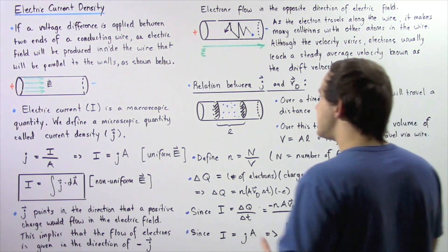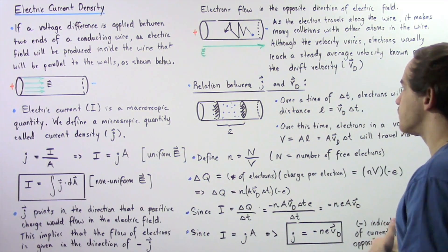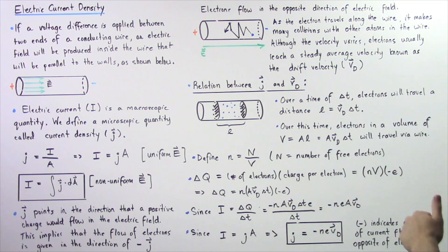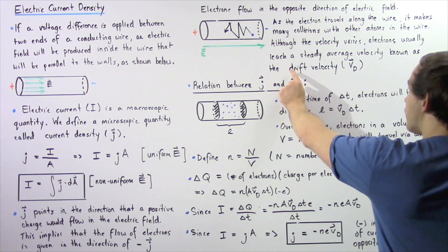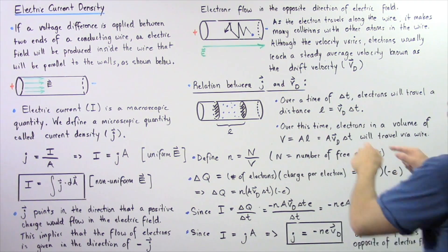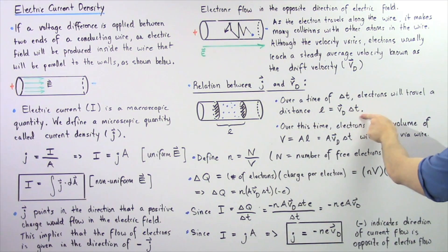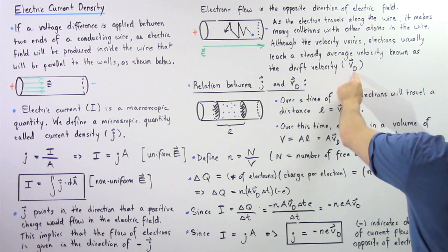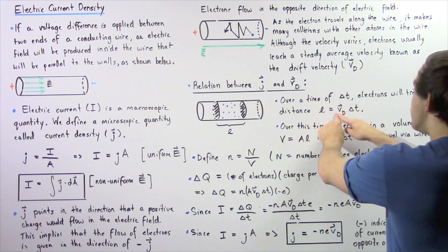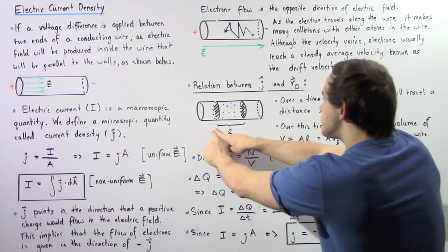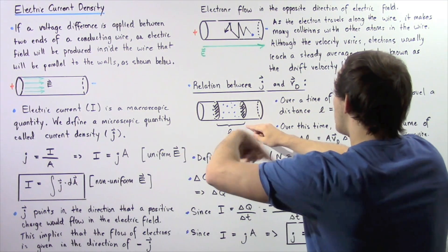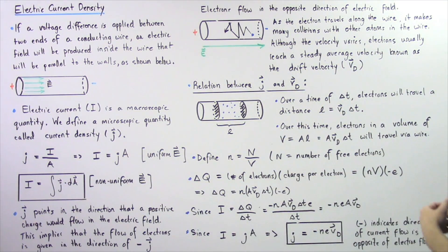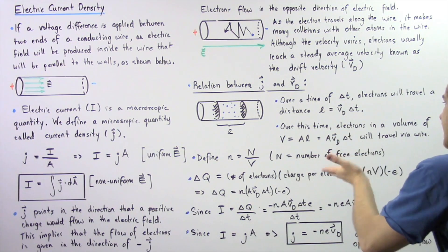Let's examine a section of our conducting wire. Over some time interval Δt, our electrons will travel a distance l. If we assume their velocity is given by the drift velocity, then Δt multiplied by v_d gives us the distance l. So l = v_d · Δt is the distance we're examining over the time interval Δt.